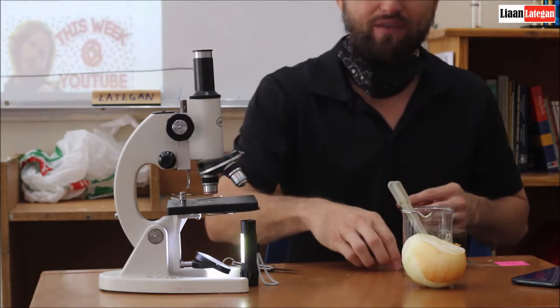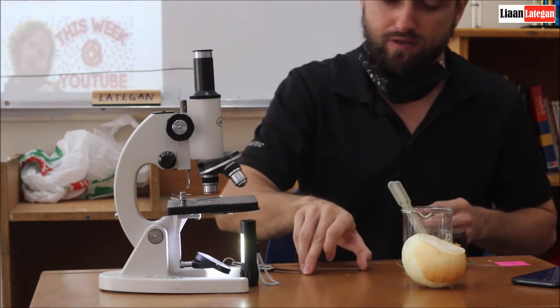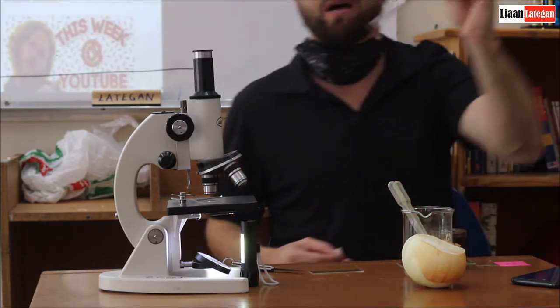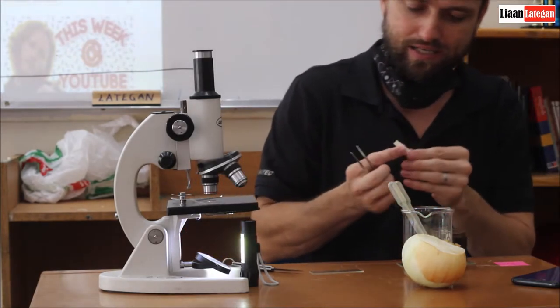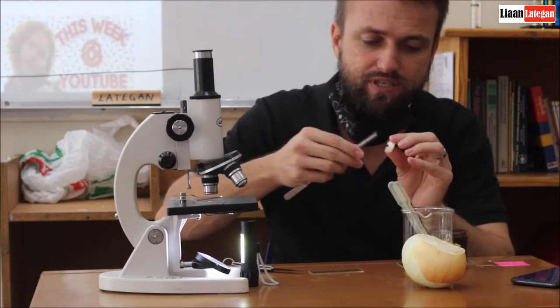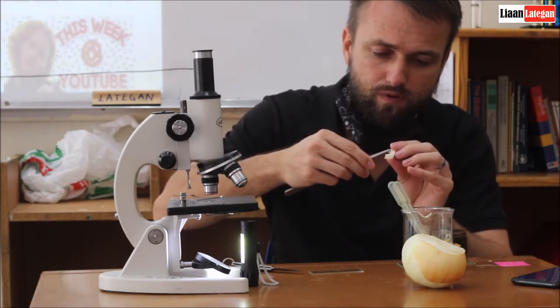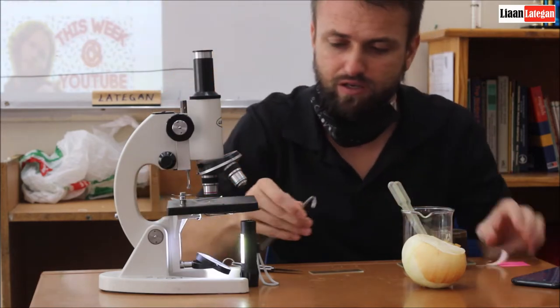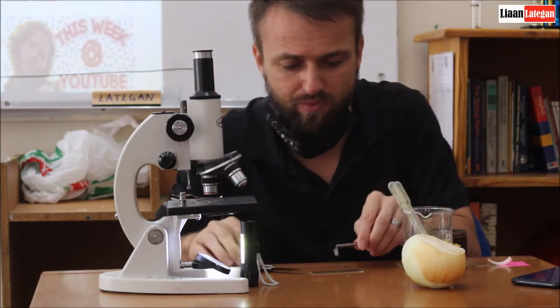Then we want to have a plate. And I just want to utilize my tongs so that I can easily get a piece of skin. That is a really good piece of skin that I got here from the onion.